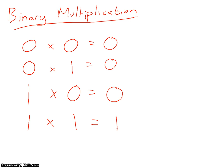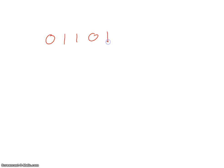With binary multiplication we use the long multiplication method, which means we're going to need to remember the rules for addition as well. Let's do an example: we'll take 01101 and multiply that by 10.